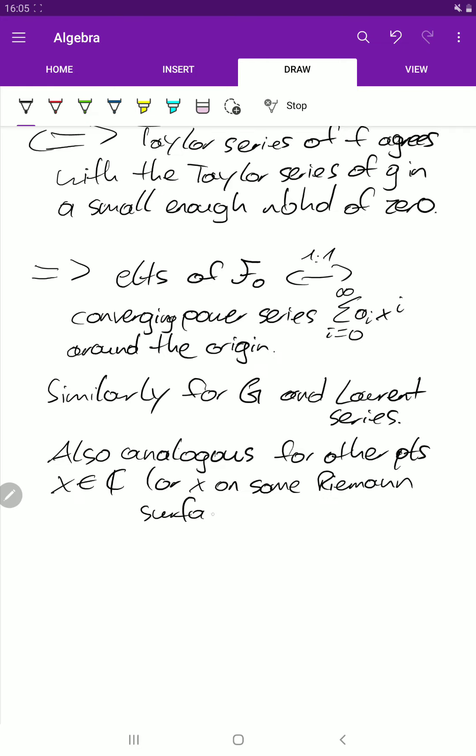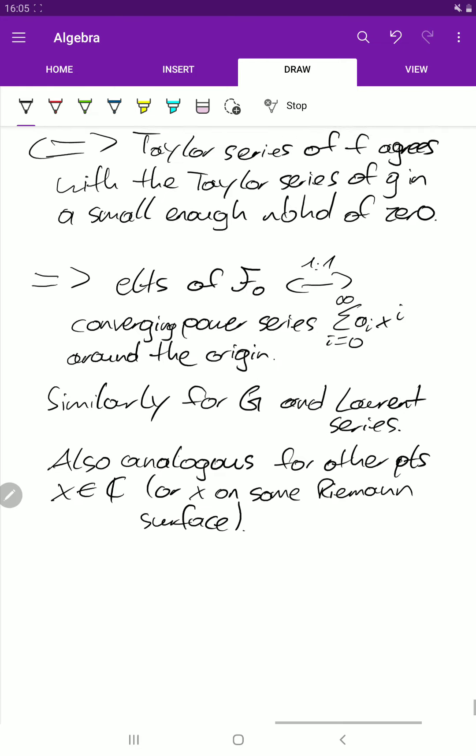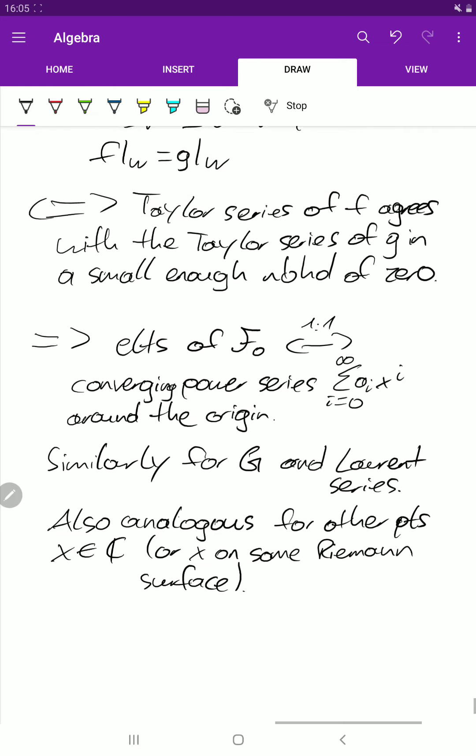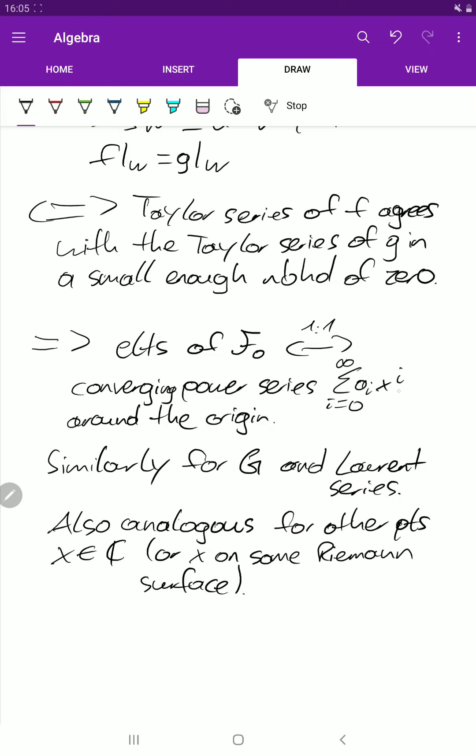So just if we have another point, then basically all that happens is that we shift that x. Well, maybe I should call this x naught and then this x gets shifted to x minus x naught to the i if we are not at the origin anymore.